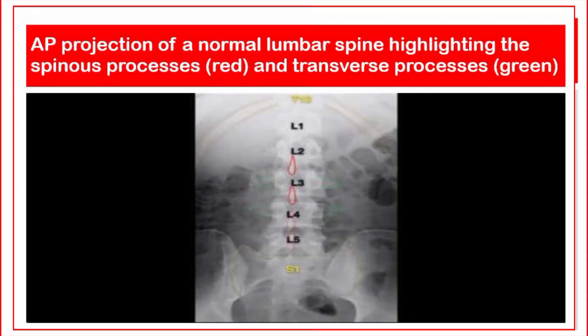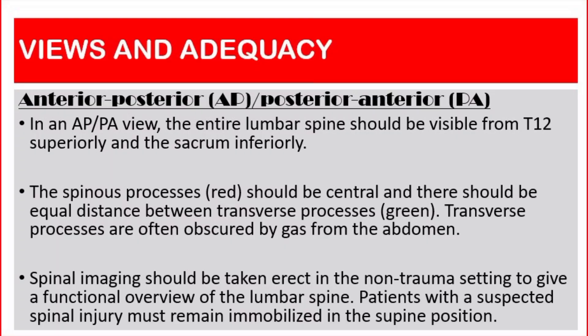The second view is anterior-posterior or posterior-anterior. In this view, the entire lumbar spine should be visible from T12 superiorly and the sacrum inferiorly. The spinous process should be central and there should be equal distance between transverse processes. Transverse processes are often obscured by gas from the abdomen. Spinal imaging should be taken erect in the non-trauma setting to give a functional overview of the lumbar spine.